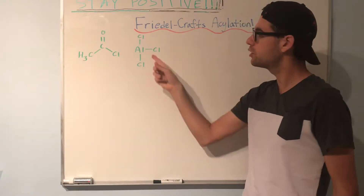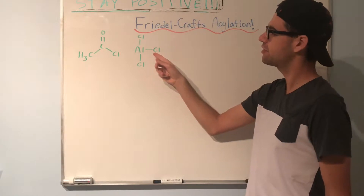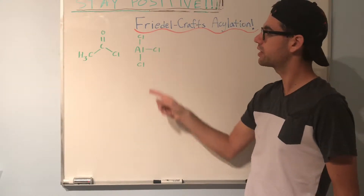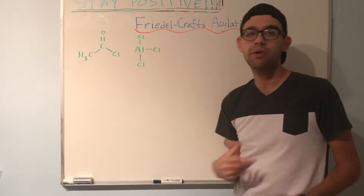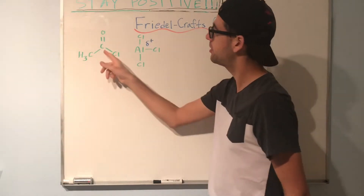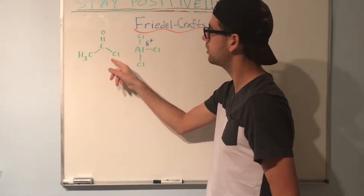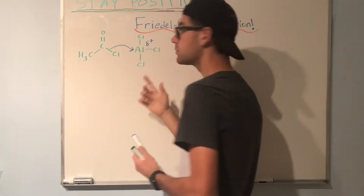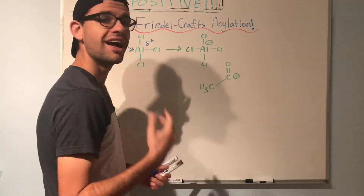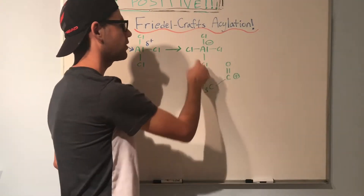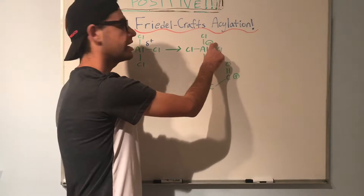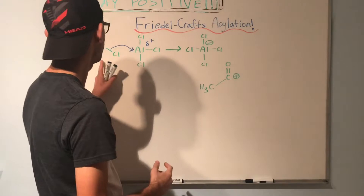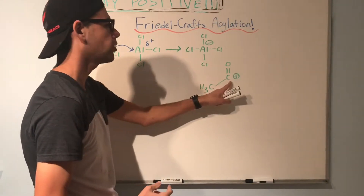We should note that aluminum is much less electronegative than the chlorines are. The chlorines are more electronegative, which means the electron density will be drawn toward the chlorine atoms, giving the aluminum a partial positive charge. What will happen next is the bond between this carbonyl carbon and the chlorine will break, and the chlorine will form a new bond with the aluminum. Now we have our aluminum with four chlorines attached to it, giving aluminum a negative formal charge, and we've also generated a carbocation, because our acetyl chloride molecule lost the chlorine.